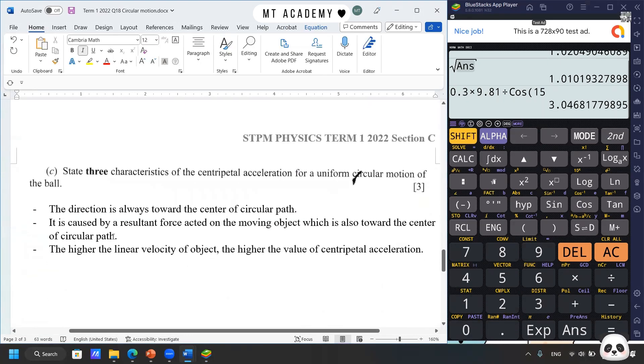We move on to the last one. State three characteristics of the centripetal acceleration for a uniform circular motion of the ball. So just write down what you understand about the centripetal acceleration. And these are few samples from me. So we can mention about the direction is always toward the center of the circular path. It is caused by the resultant force acted on the moving object, which is also toward the center.